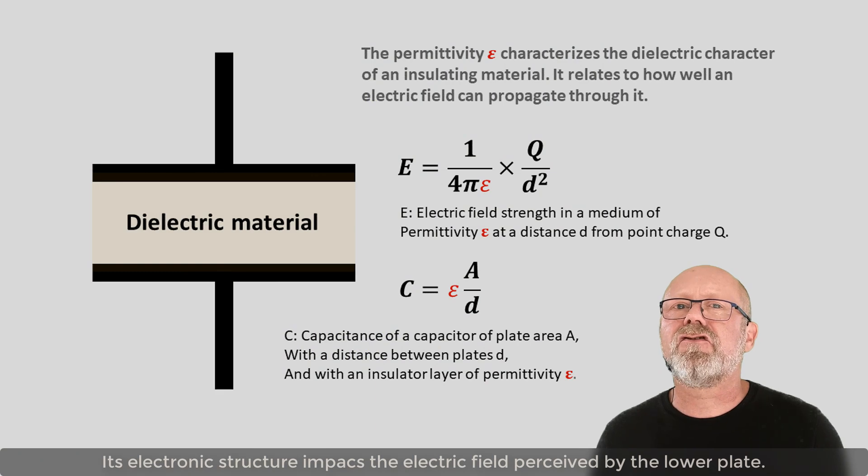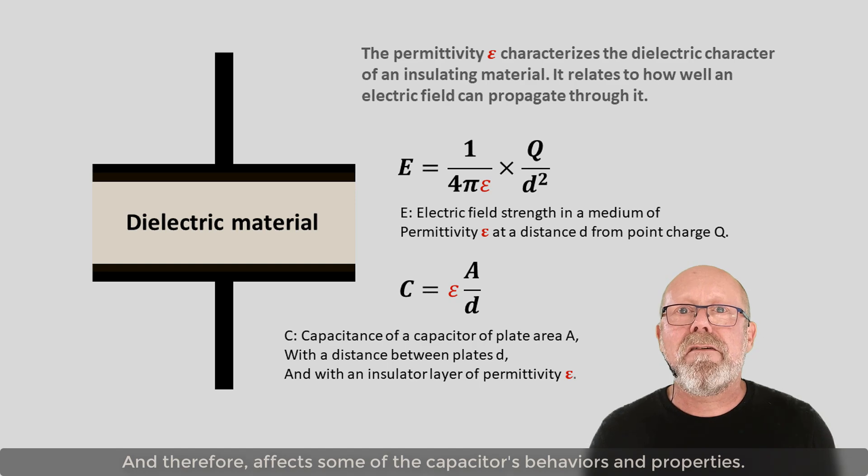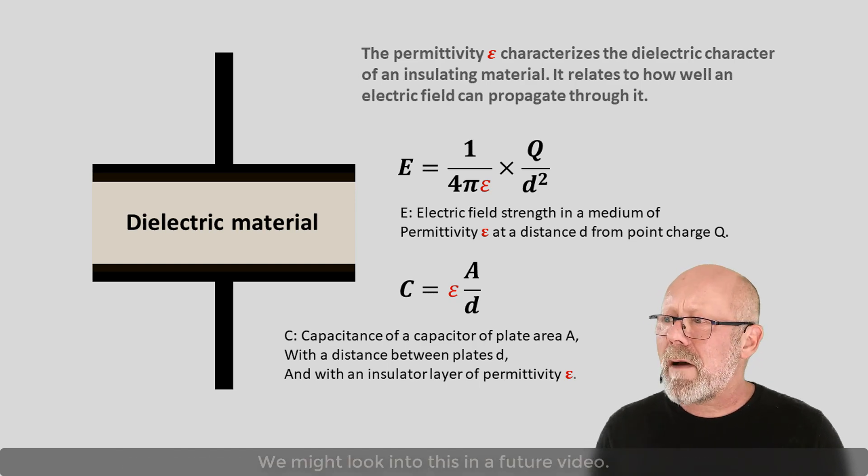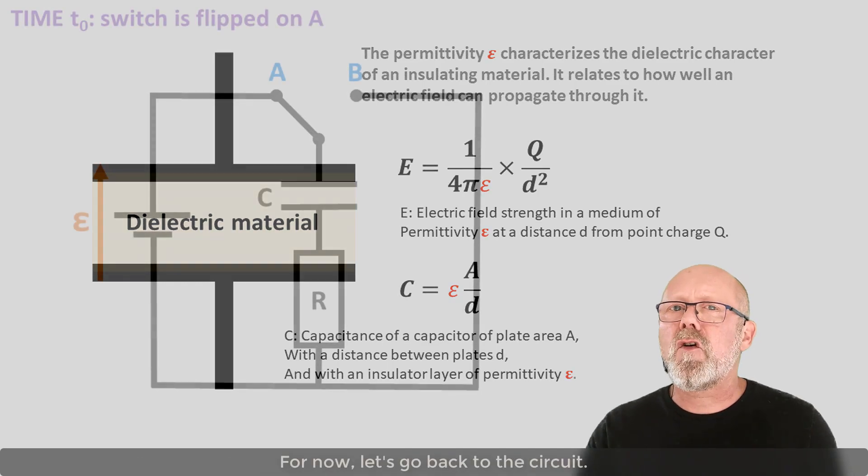This insulating material is called a dielectric. Its electronic structure impacts the electric field perceived by the lower plate, and therefore affects some of the capacitor's behaviors and properties. We might look into this in a future video. For now, let's go back to the circuit.